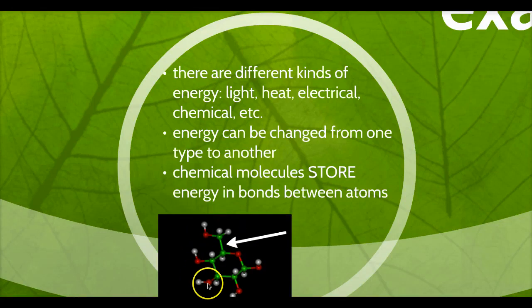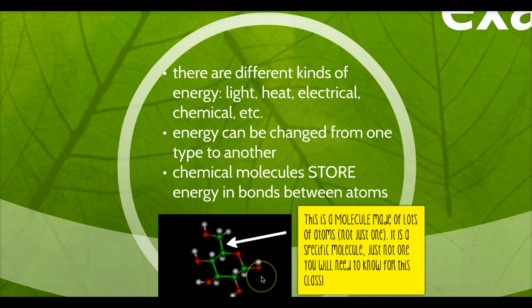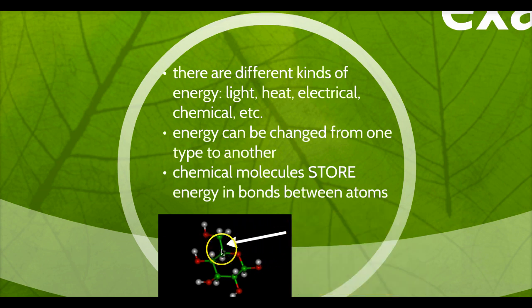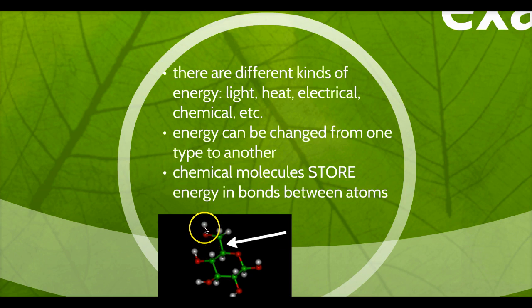Chemical molecules store energy in the bonds between atoms. If you look here where the arrow is pointing, this line is a bond between this atom and this atom. There's energy stored between those two atoms. Any time you see a line like that, those are chemical bonds, and those bonds are containing energy. Energy can be released when those bonds are broken.